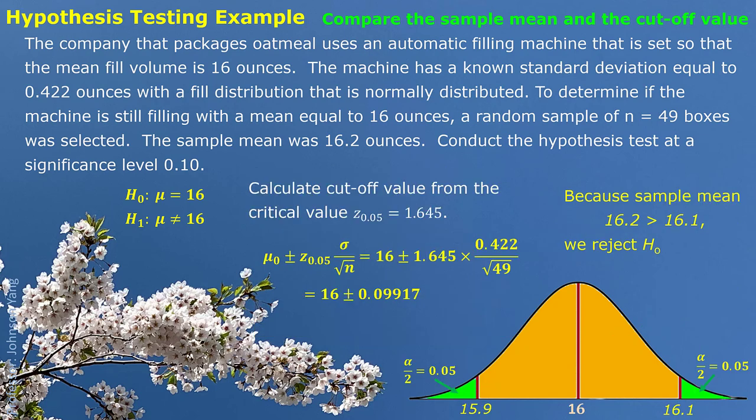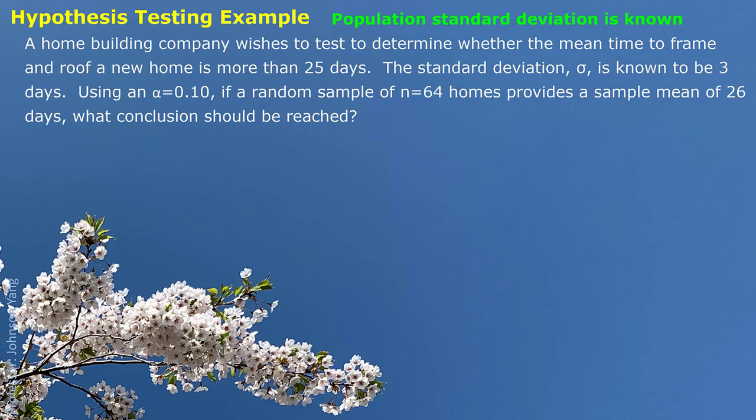Or we can directly compare the original data value to the cutoff value — that is, how far is considered far enough to reject. We set up that border at 16.1 and 15.9. If our sample data falls outside this range, that means it is far enough.